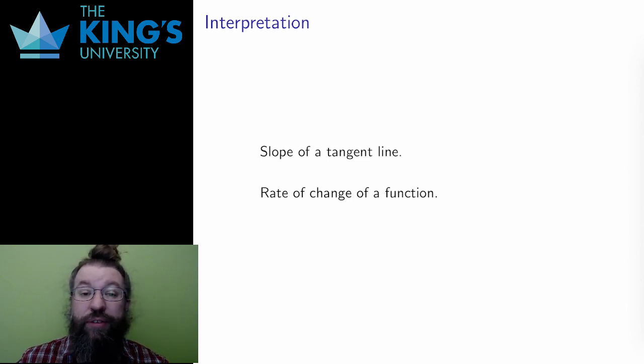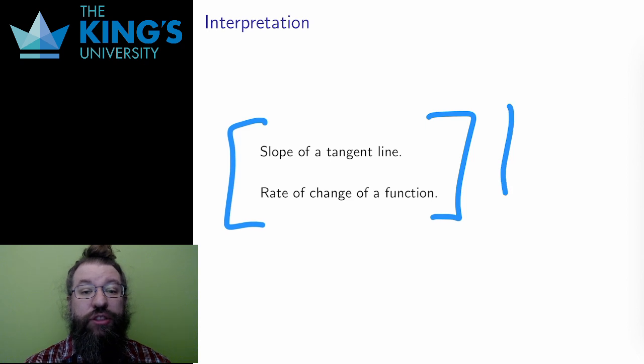A derivative means two things. It is the slope of a tangent line and the rate of change of the function. Keep this in mind. As you move on to calculate derivatives, remember that you are always calculating something that has meaning. This is what the derivative is. It is the thing that captures these two ideas, the slope of the tangent line and the rate of change.